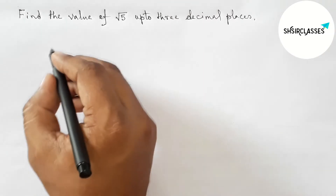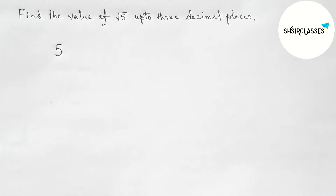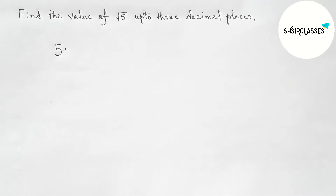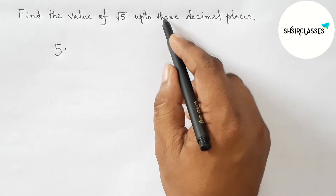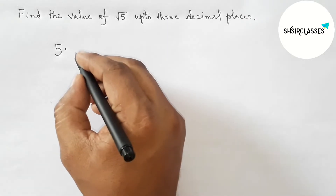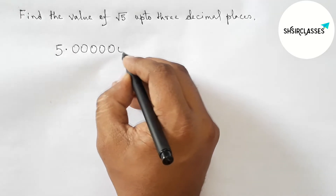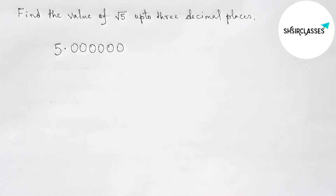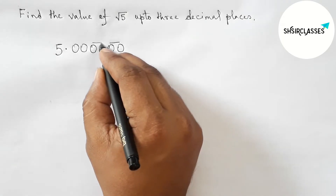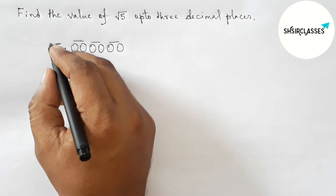First of all, let us solve this problem. Here, first write 5, then take a decimal point. Now finding the value of root 5 up to three decimal places, so taking 6 zeros for three decimal places. Next, marking pairs — taking two zeros as a pair — so we got three pairs of zeros.